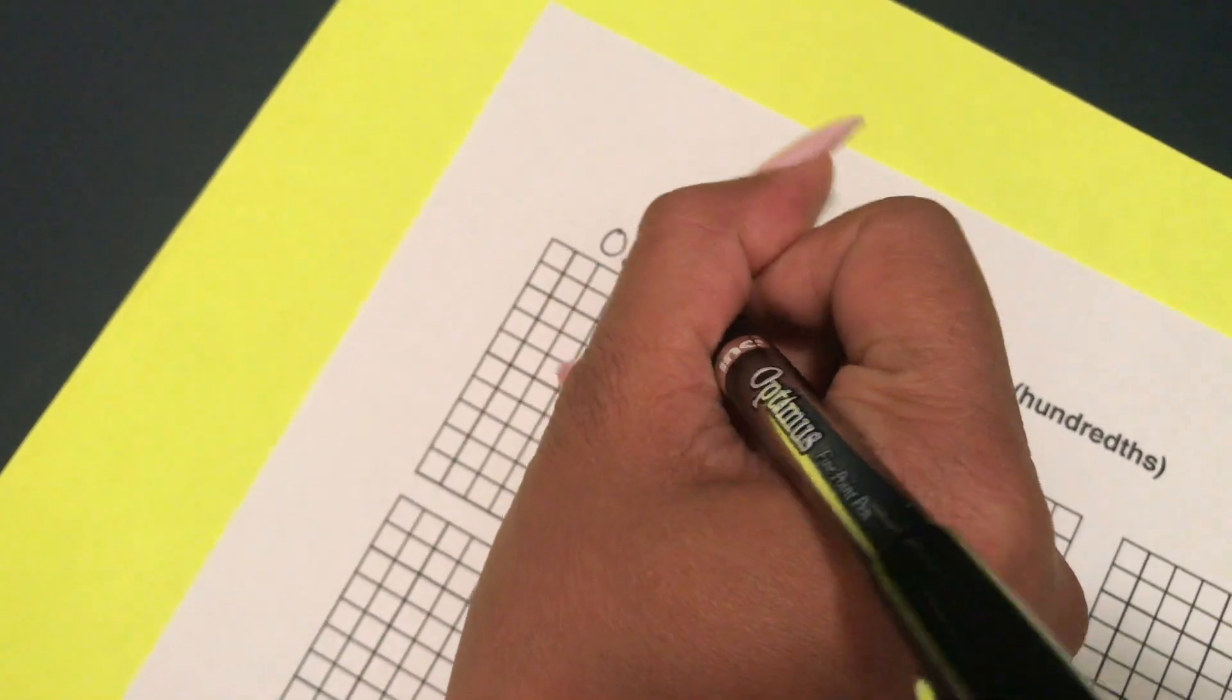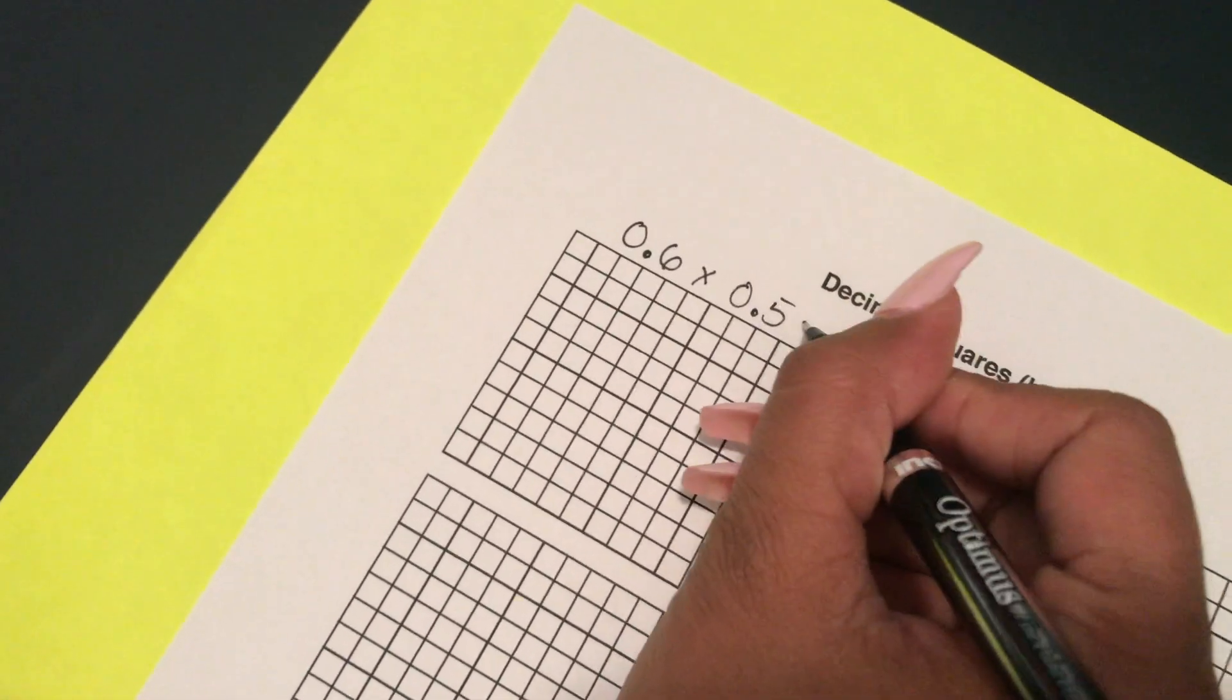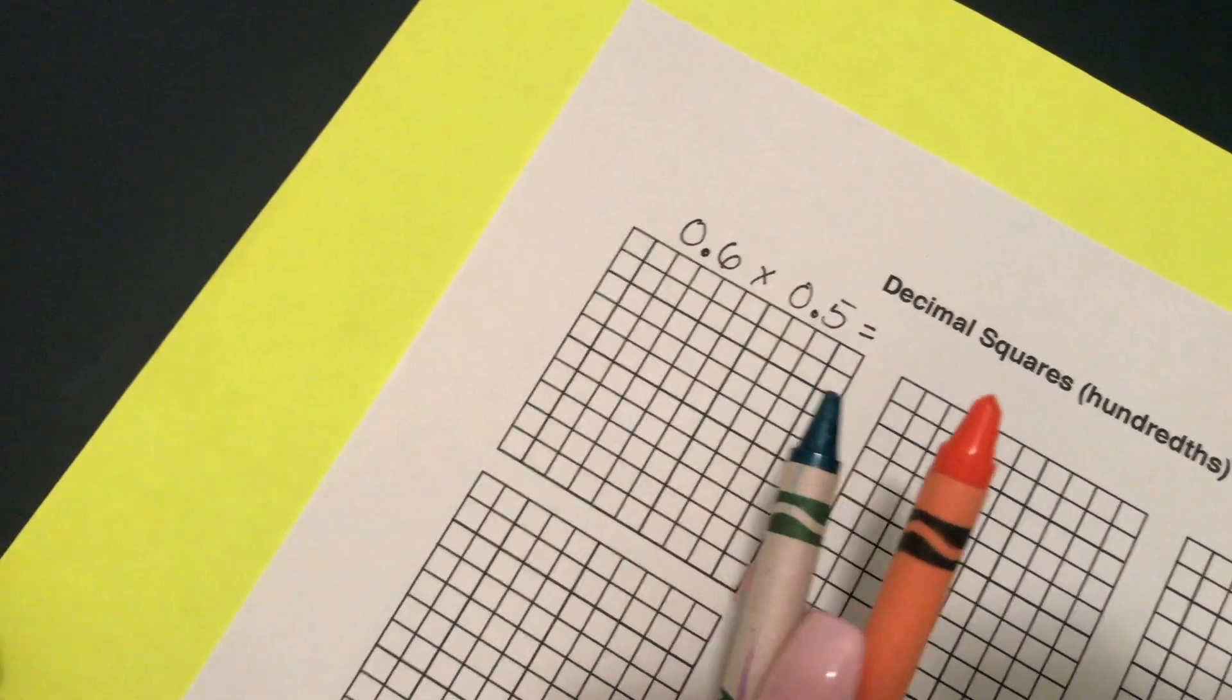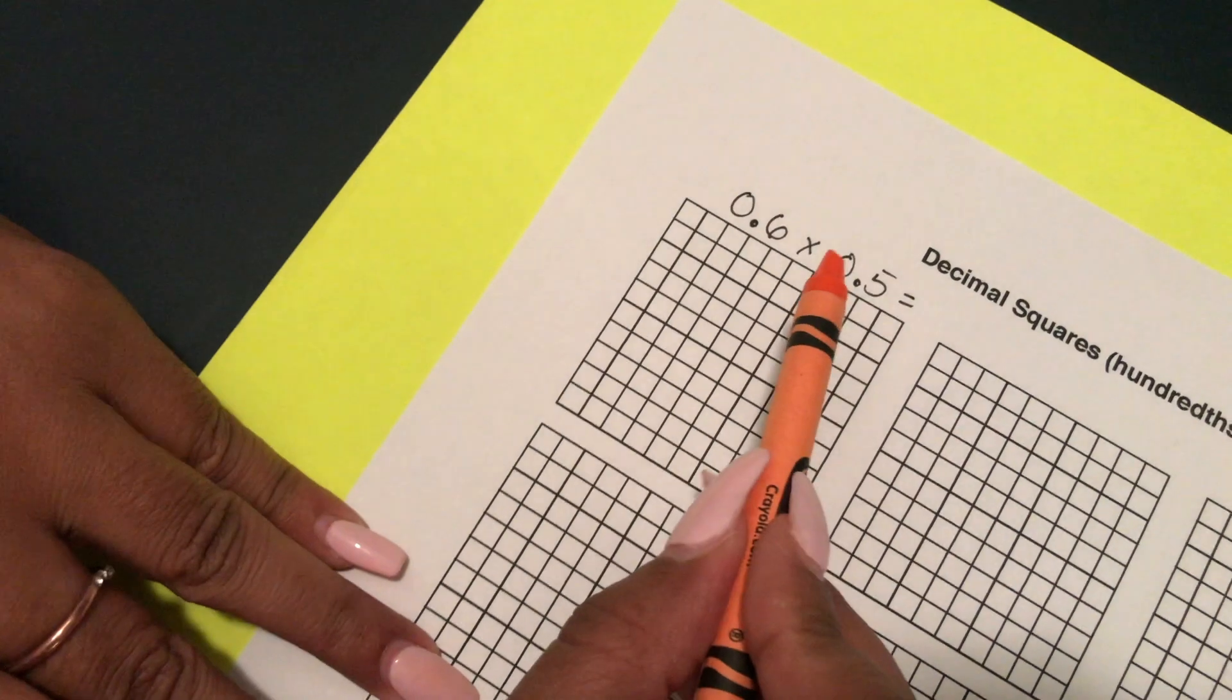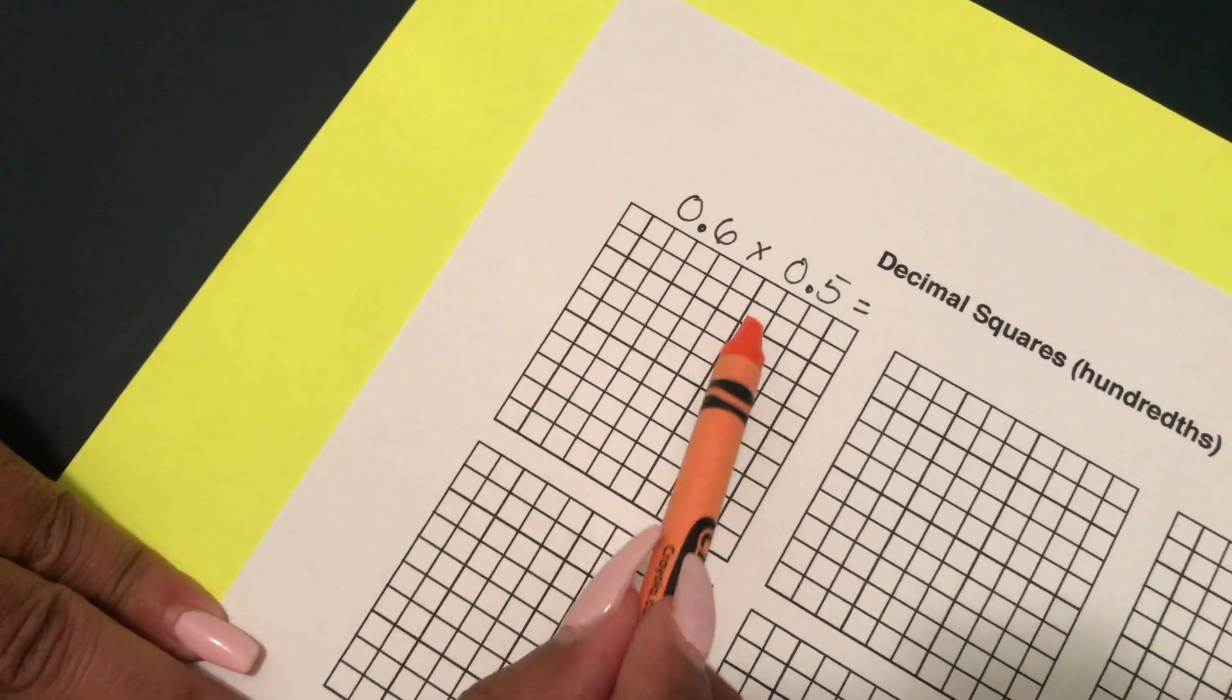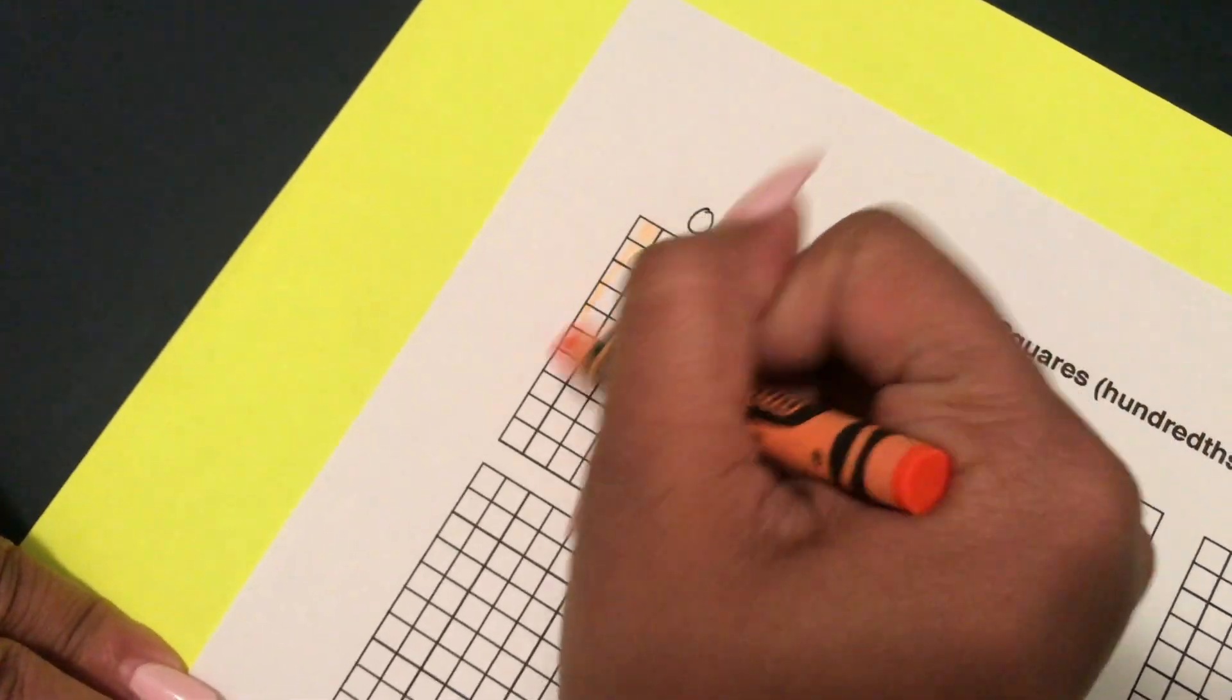So let me give you an example so I can show you how would you multiply this. Say I have six tenths and I want to multiply six tenths by five tenths. So I'm going to show you with shading. The first thing that I'm going to do is get two different colors because I want each color to represent a different number.